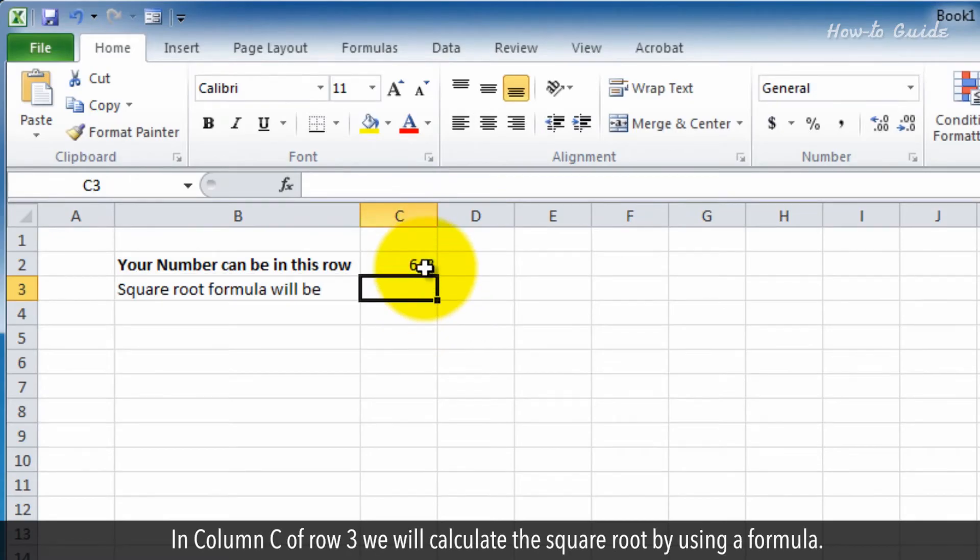In Column C of Row 3, we will calculate the square root by using a formula. I have selected the cell of Column C of Row 3.